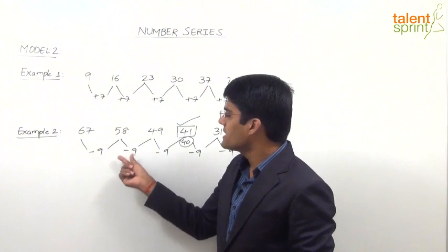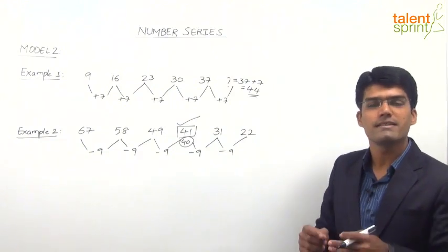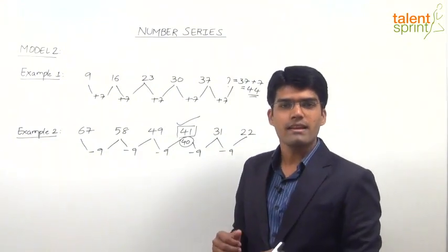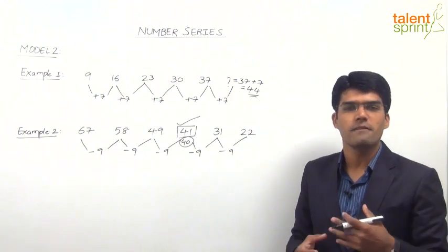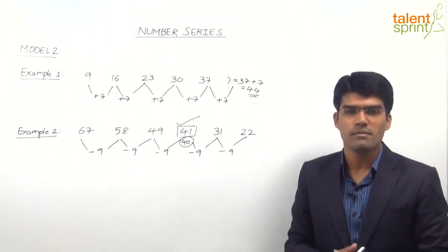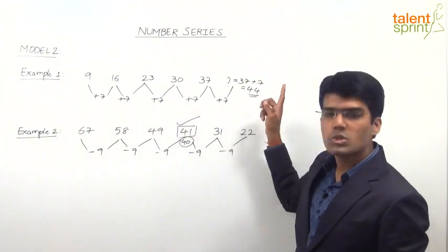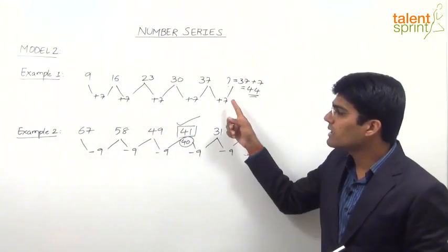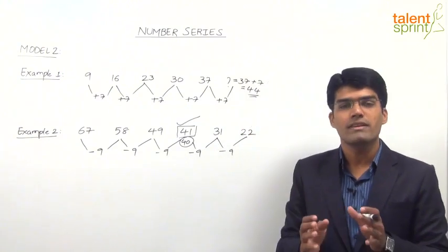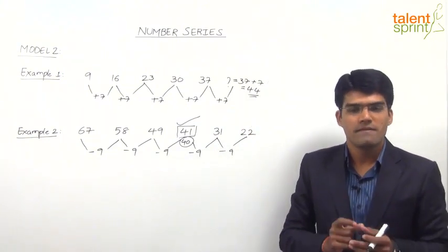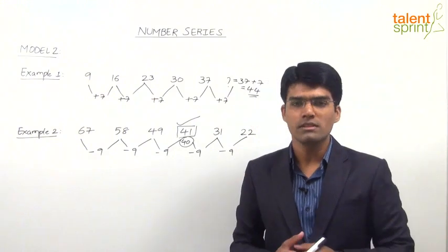This is also a case of arithmetic series where the difference between two consecutive terms is a constant value. From these two examples, questions may be given either in terms of finding a missing number or finding the wrong number. Whenever you find a series that is increasing or decreasing gradually, check the difference between two consecutive numbers — if it is a fixed value, it is definitely an arithmetic series.